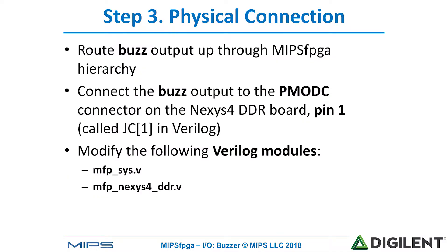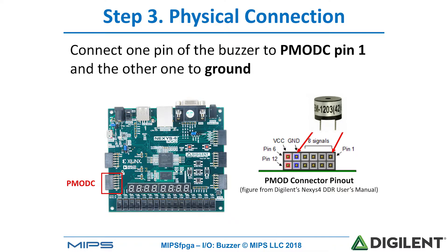After completing the buzzer hardware and the memory mapped I/O, we need to make the physical connection from the MIPS FPGA system to the Nexus 4 DDR board, where we'll connect the buzzer. We'll route the buzz output from the buzzer hardware up through the MIPS FPGA hierarchy by modifying the Verilog modules MFP_Sys and MFP_Nexus4_DDR. In the top-level module, MFP_Nexus4_DDR, we'll connect it to the PMOD C port by naming that connection JC1. PMOD C is located on the lower left of the Nexus 4 DDR board, and we'll connect the buzzer to pin 1 of that port as well as ground.